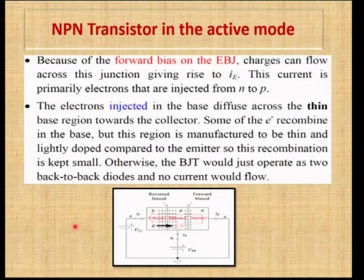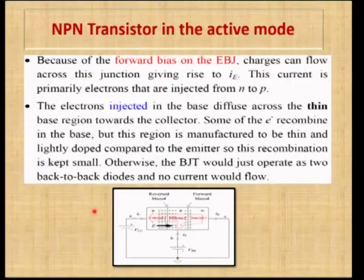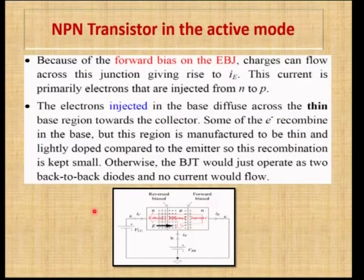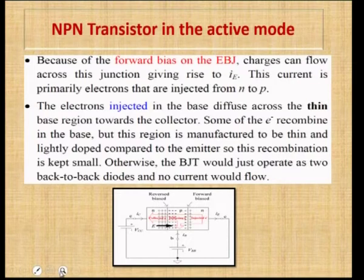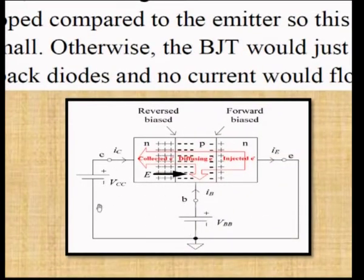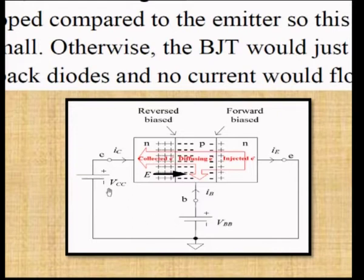Next we move on to NPN transistor in active mode — what happens inside the junction, and how electrons flow when we apply an external voltage. For the NPN transistor operating in active mode, we connect external voltages VCC and VBB. The collector terminal, base terminal, and emitter terminal are identified, with VEB as the output voltage and VCB as the input voltage.